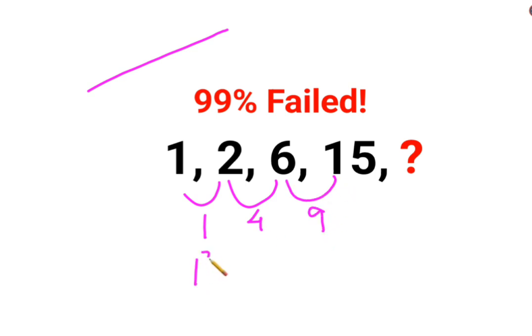Now if you look here, this can be written as 1 square. This can be written as 2 square. This can be written as 3 square. So the next difference should be—yes, you guessed it right—should be 4 square.